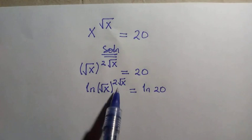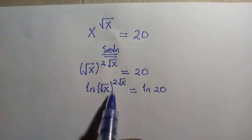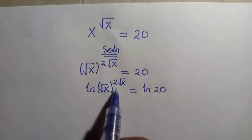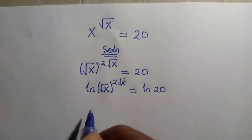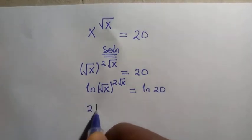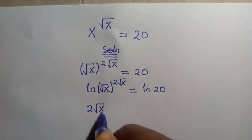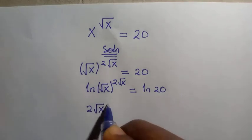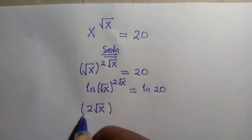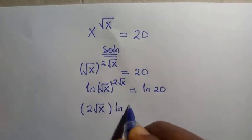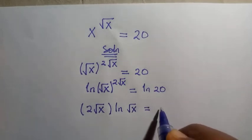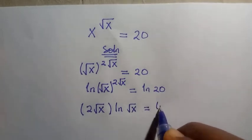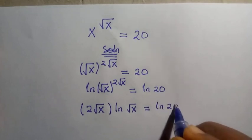And here we have, by rule of logarithm, we take this root x, 2 root x, we take it down. And here we have 2 root x. Then this is multiplying ln of root x. Everything equals ln 20.